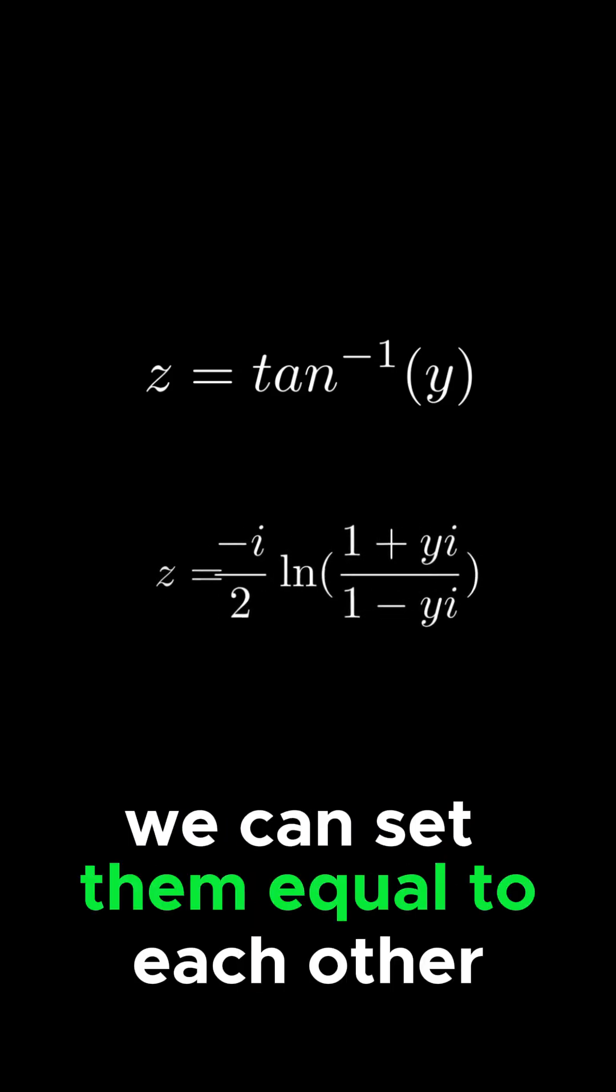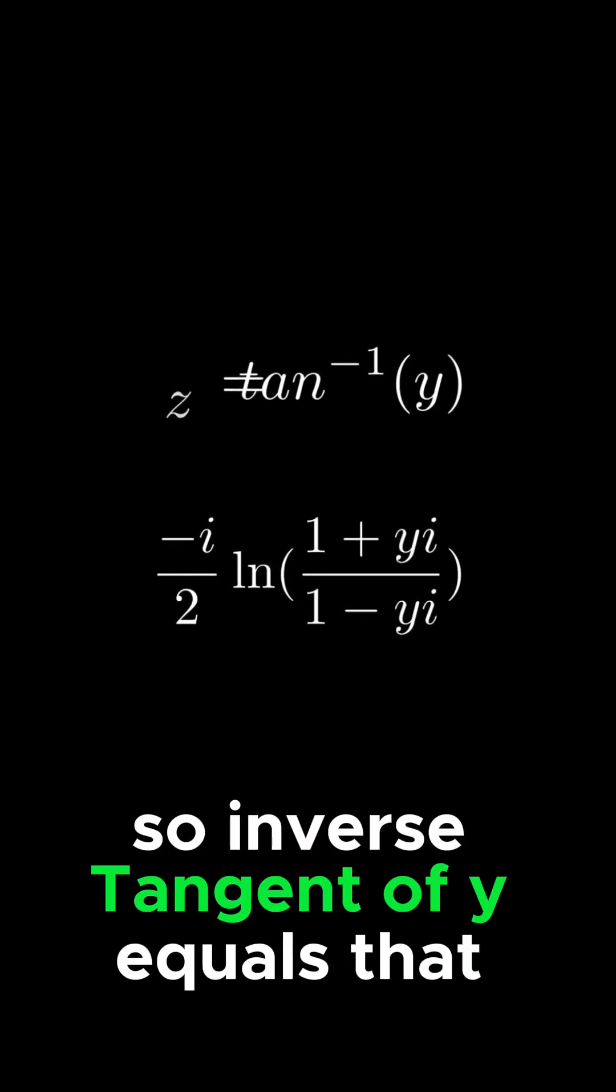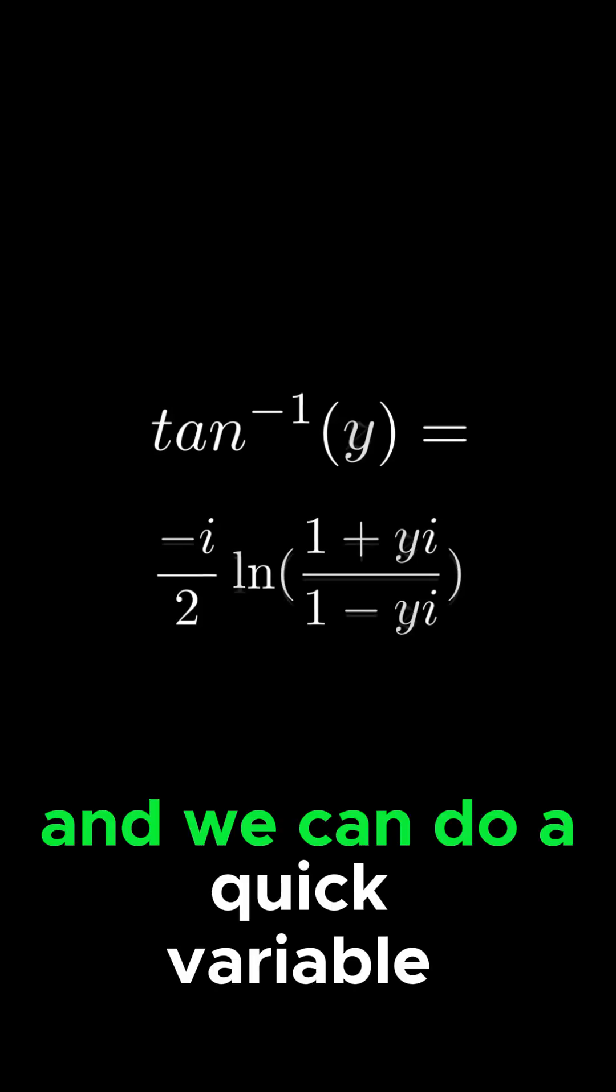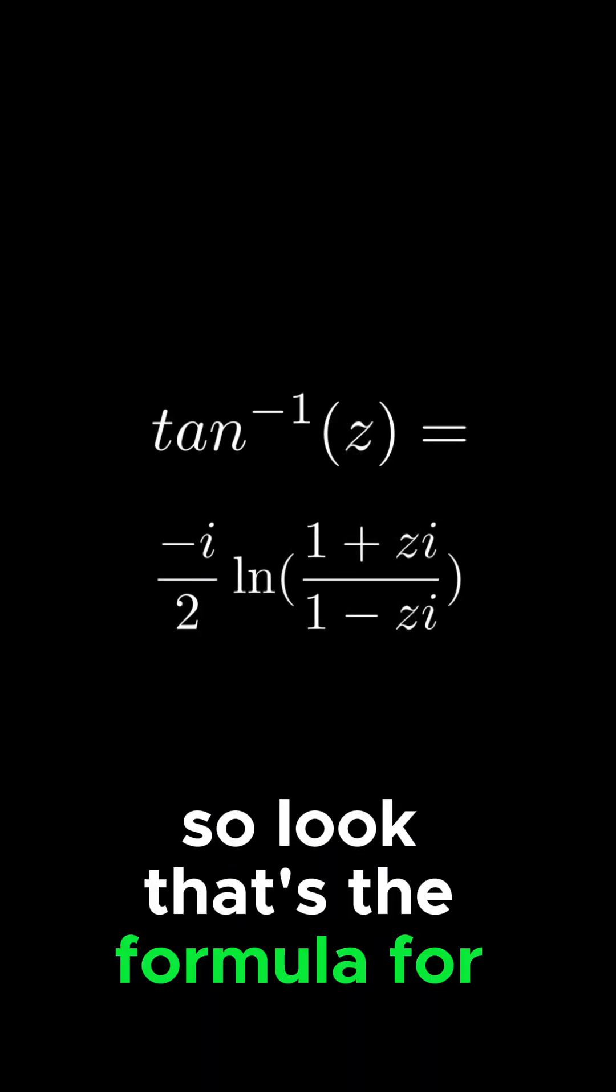And since they both equal z, we can set them equal to each other, so inverse tangent of y equals that big thing, and we can do a quick variable change. So look, that's the formula for inverse tangent of z.